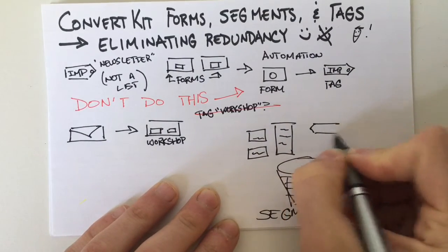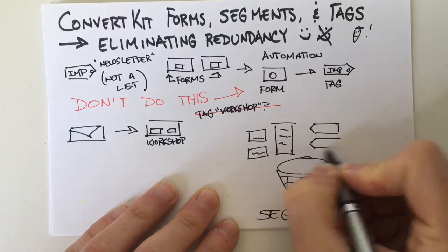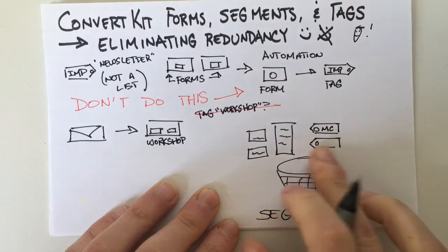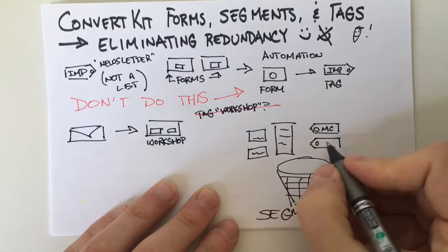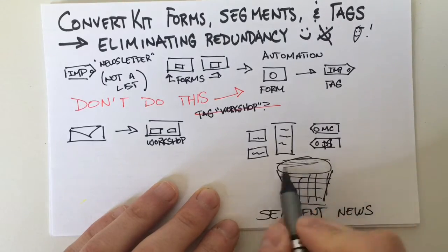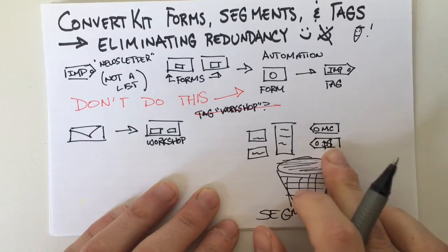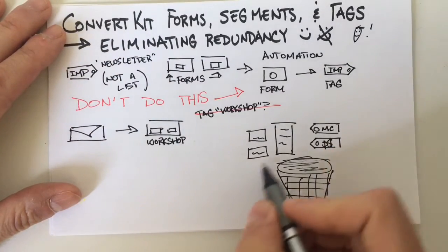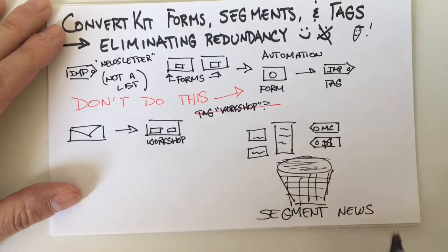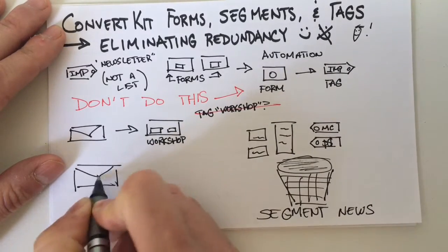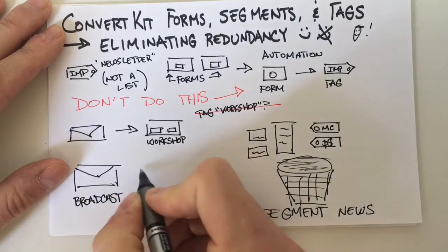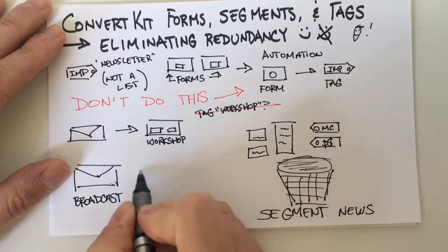And then I'll also put in any tag that I've imported — maybe it's from MailChimp or something. Or even people who have come in through some other indirect method, like an import, or maybe they purchased a product from me. They purchased the product but I still want them to get my newsletter. So these are all people through forms, landing pages, or tags — I can combine all of these dynamically into a segment. And now when I go to send my newsletter broadcast, all I need to do is select this segment.